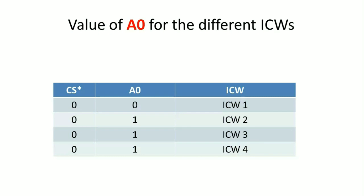As seen in the table, A0 equals 0 for ICW1, and A0 equals 1 for the remaining initialization command words ICW2, ICW3, and ICW4. The chip select line is always logic 0 to enable the 8259 PIC.